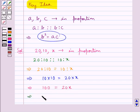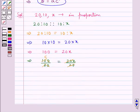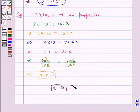To get the value of X, we divide both sides by 20. And from here we have 100 divided by 20 equals 20X divided by 20. Therefore, we get X is equal to 5. So, X equal to 5 is our final answer.